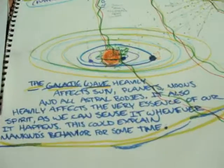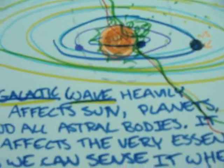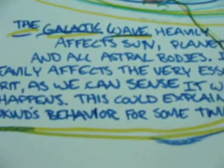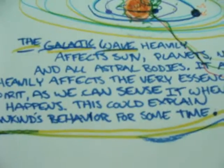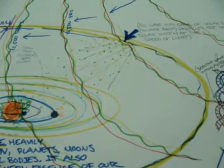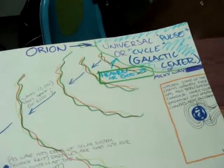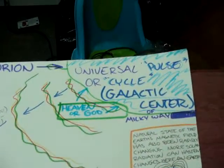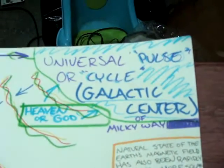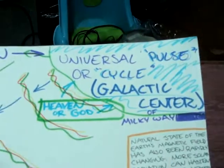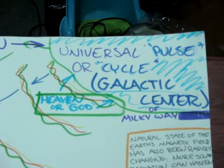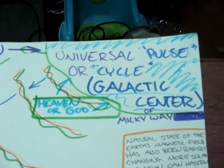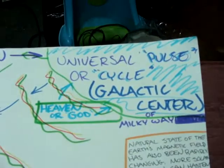Here we have the solar system — the sun and the planets. What happens is out here — you're going to have to follow me. This is the universal center. This is Orion. This is the galactic center, the universal pulse, where it originates.